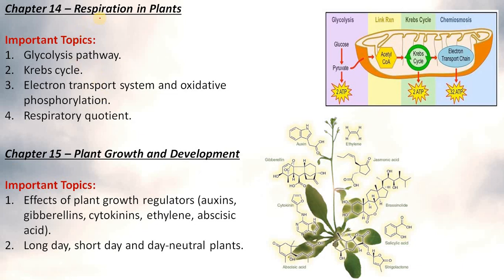Chapter 14 Respiration in Plants: glycolysis pathway, Krebs cycle, the electron transport system that is the ETS or electron transport chain and oxidative phosphorylation is very much important and respiratory quotient which is known as RQ.